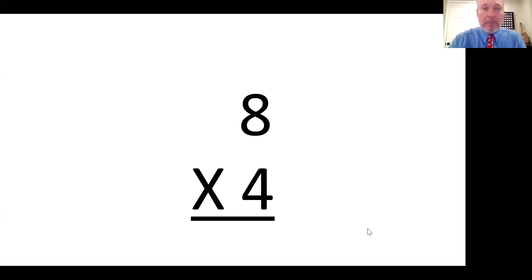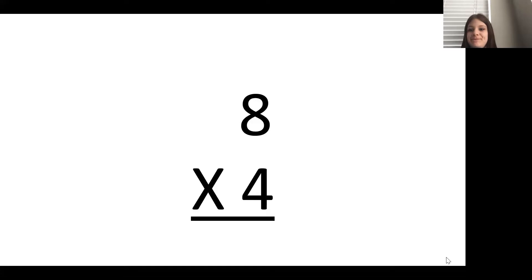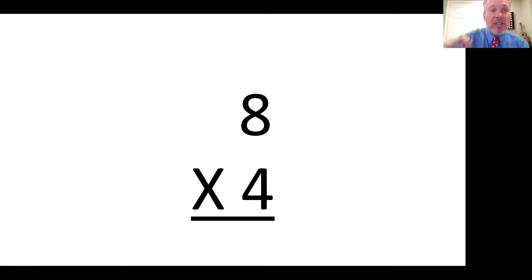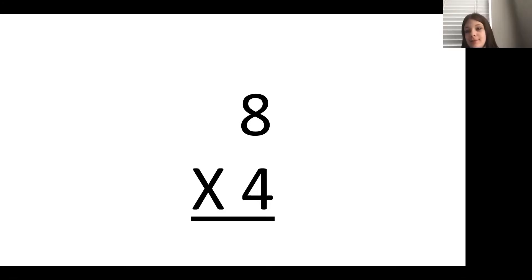Do you see it okay, Emma? Yeah. All right, this is 8 times 4. 8 times 4 is 32. Say that whole thing, please. 8 times 4 is 32. Good, 8 times 4 is 32. Every time you see this, I want you to say all of that. All the rest you can just tell me the answer. So say this one again, please. 8 times 4 is 32.